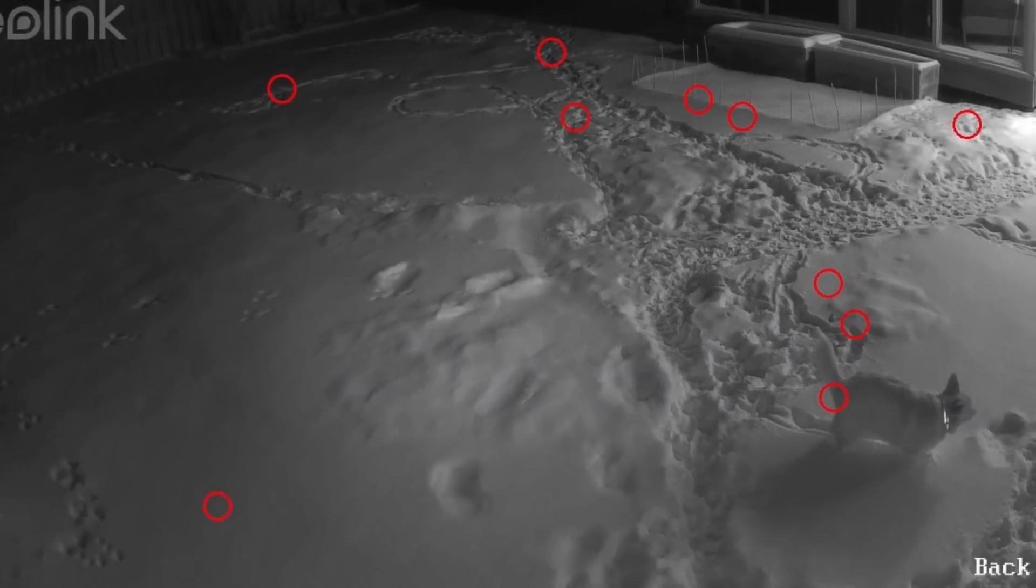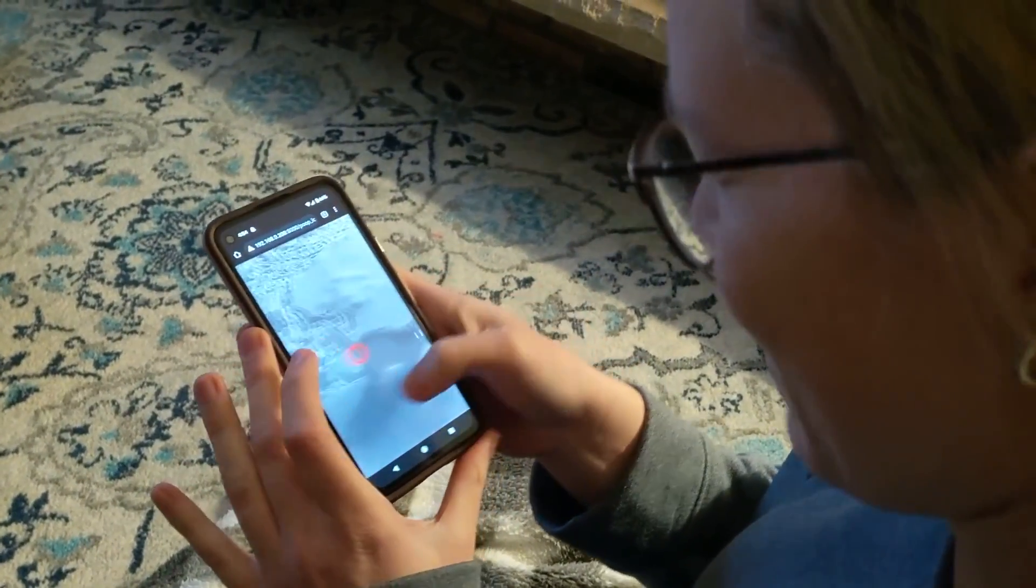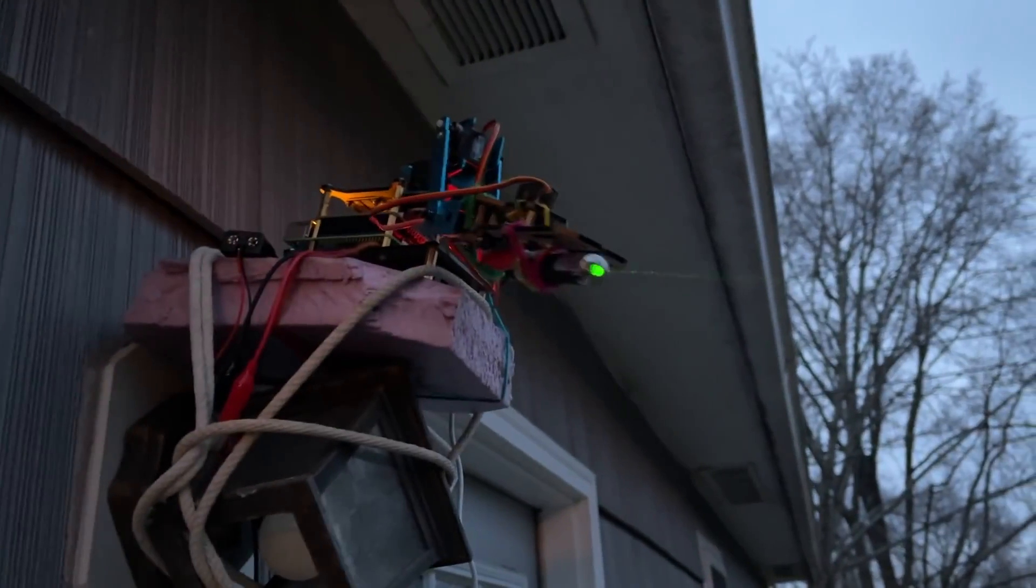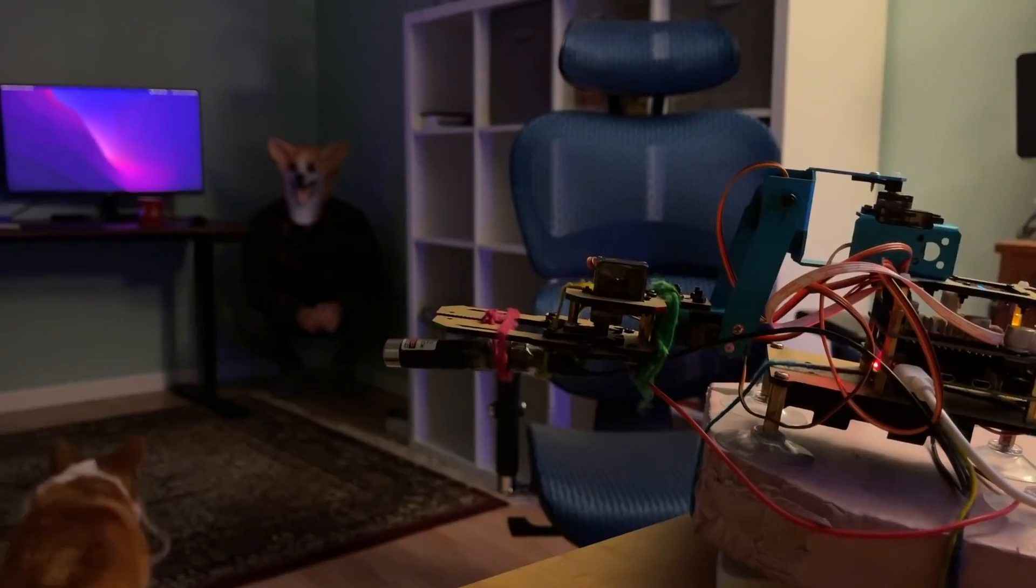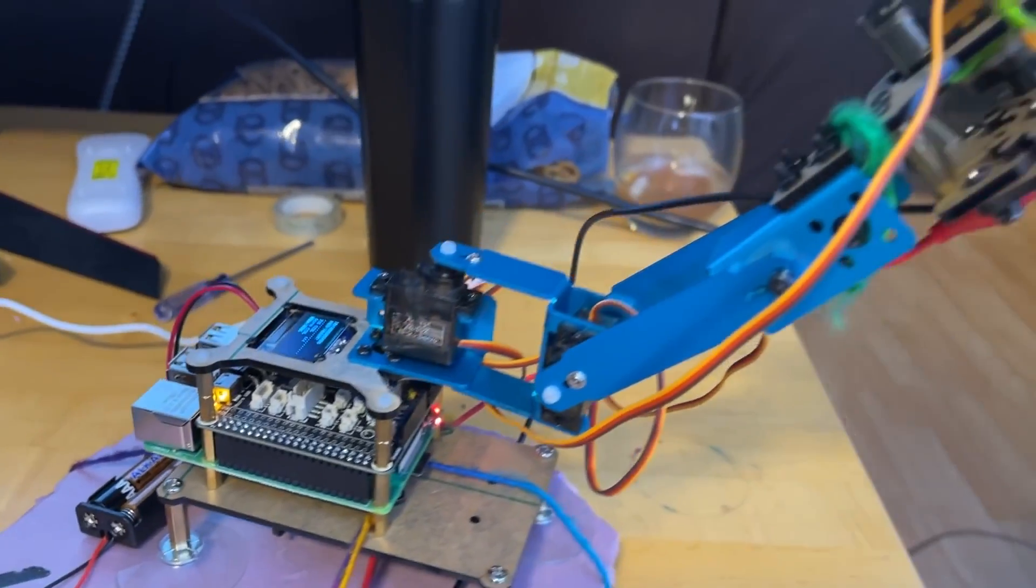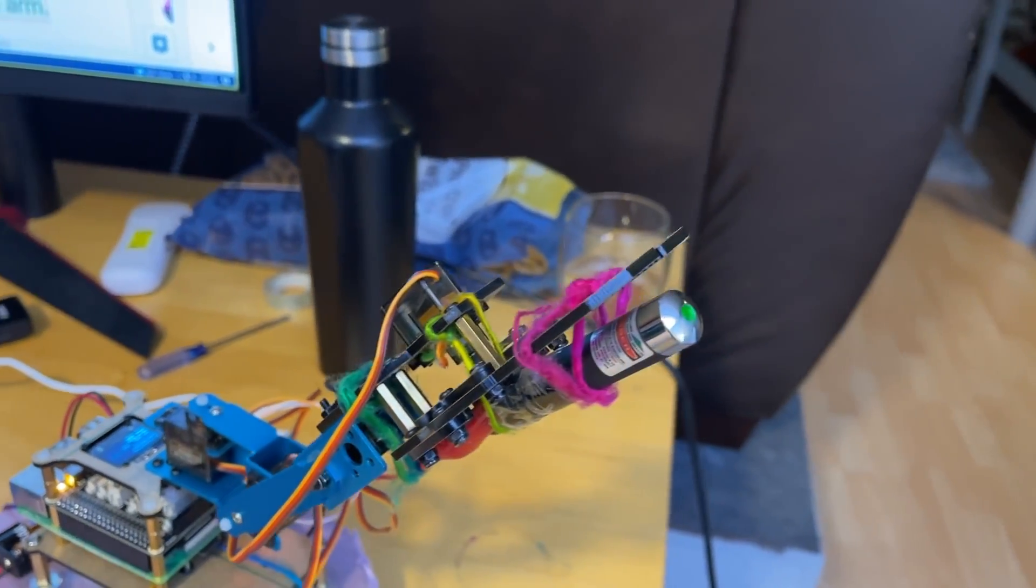However, it turns out that a digital turd map alone is not quite enough to really help with the collection and cleanup. So in his latest video, Caleb shows how he added a robotic arm laser targeting system to precisely point out the little piles of fertilizer.